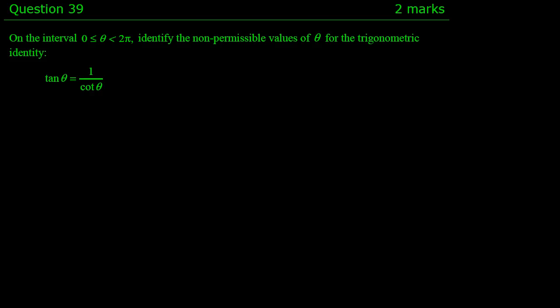On the interval from 0 to 2π, identify the non-permissible values of θ for the trigonometric identity tan θ equals 1 over cot θ.